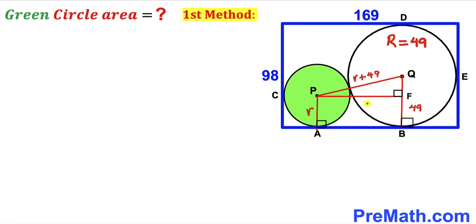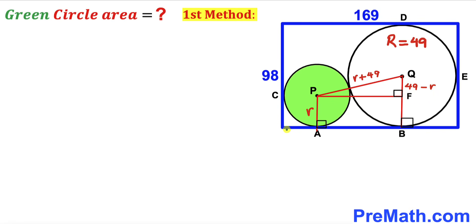In this next step I have dropped perpendicular PF onto radius BQ, giving us right triangle PFQ. We can see that segment BF has length equal to lowercase r, and since the whole radius BQ is 49, the segment FQ has length 49 minus r.